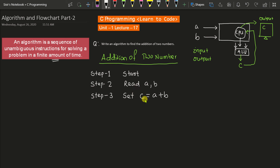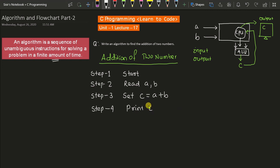After finding that value, the result has to be shown. Otherwise, how would we know the addition has been done? So after the CPU receives the result, it has to send the C value to the output window so the user can see it. So Step 4 is: Print C. This instructs the computer to display C on the screen so we can see the result. And the last step is: Stop. Every algorithm must start with Start and end with Stop.